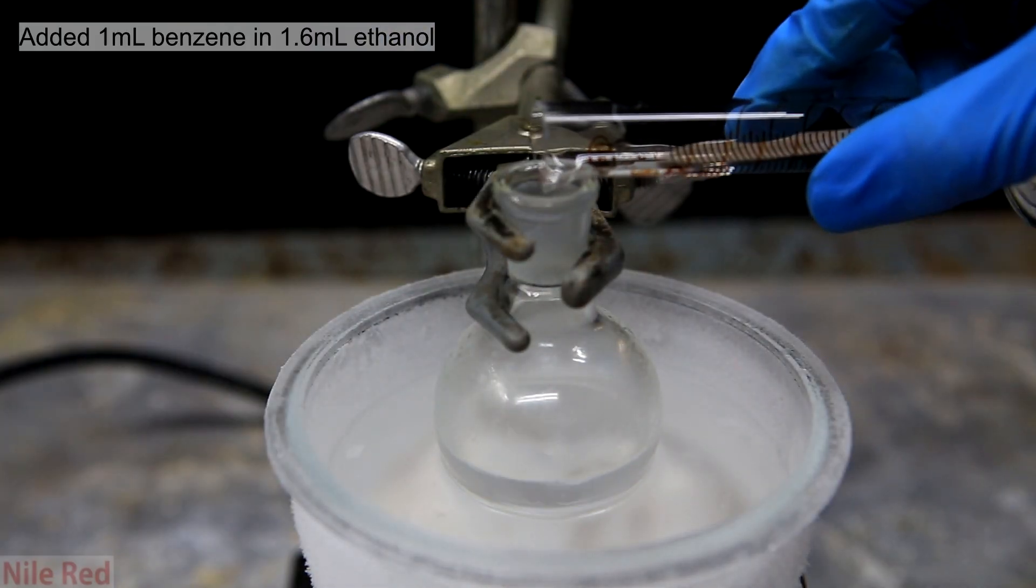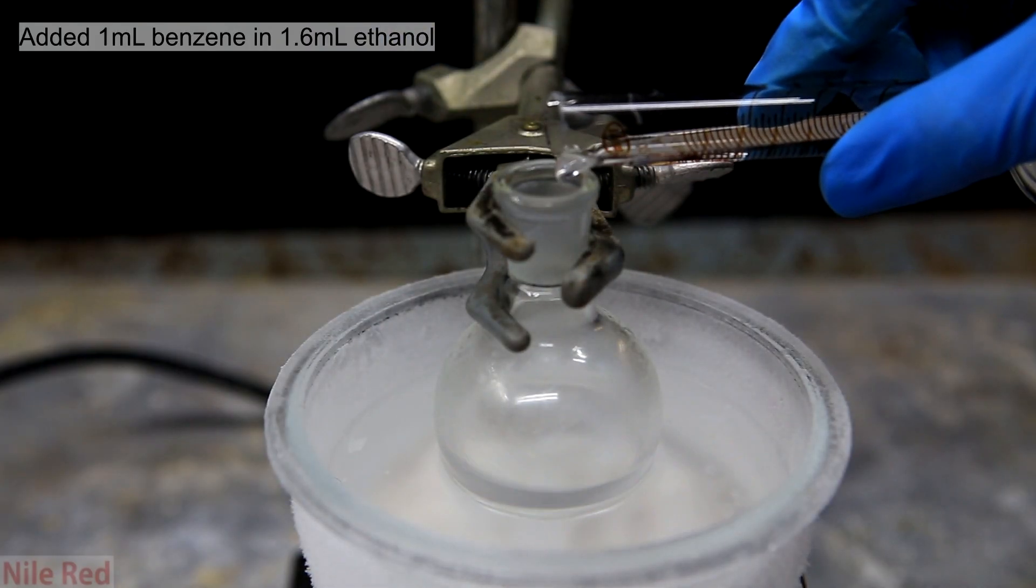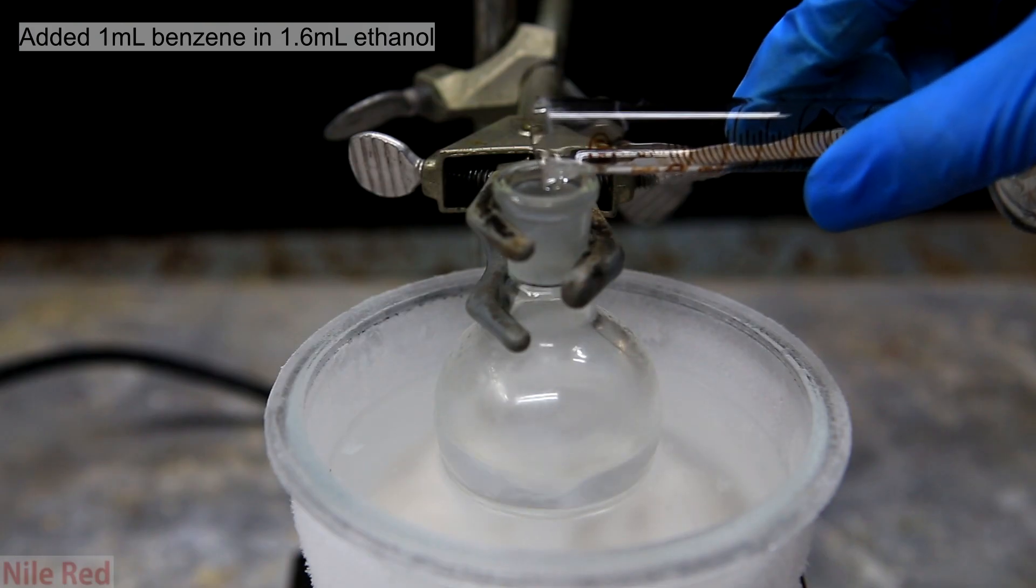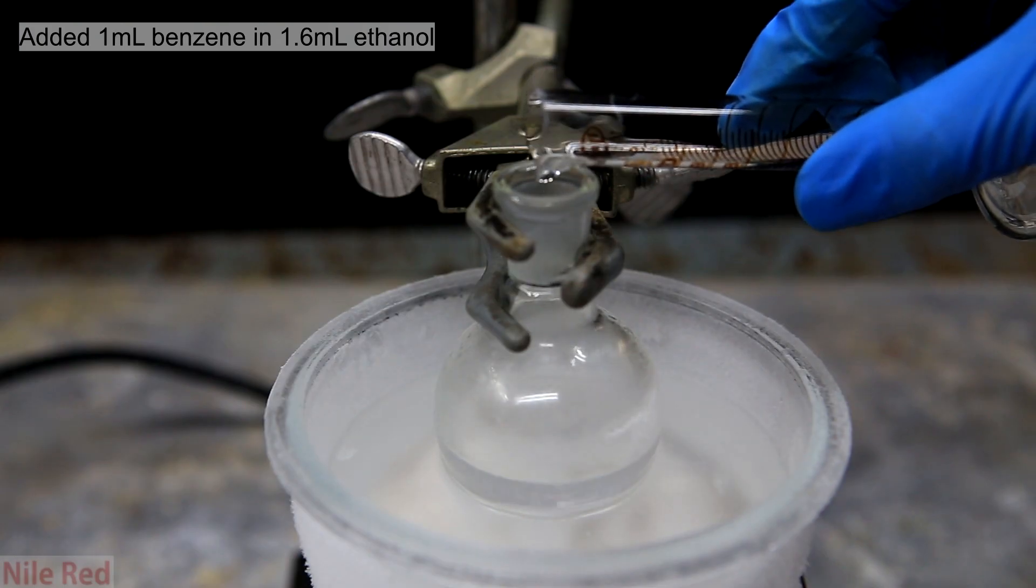The cap's then removed and I slowly pour in one milliliter of benzene that's dissolved in 1.6 milliliters of anhydrous ethanol.